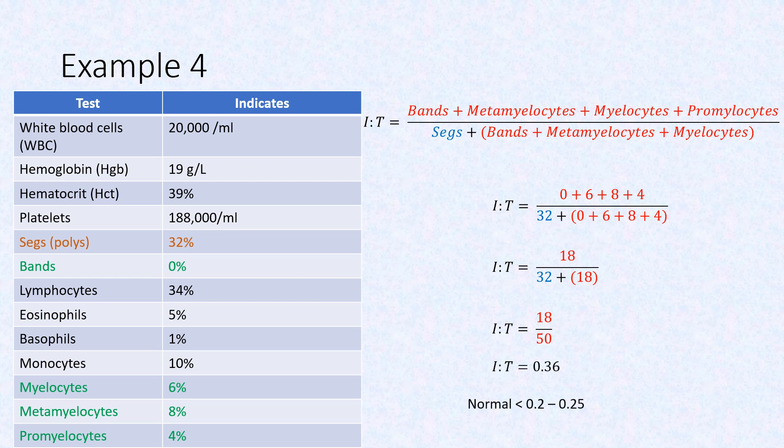Recall that a normal IT ratio is less than 0.2 to 0.25, so this is suggestive of infection.